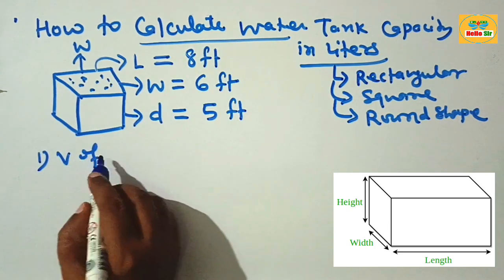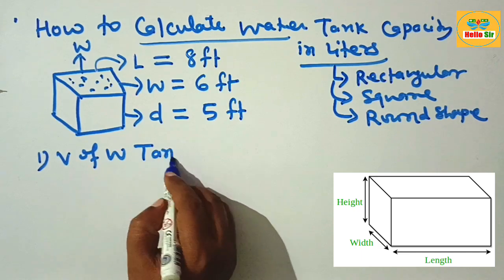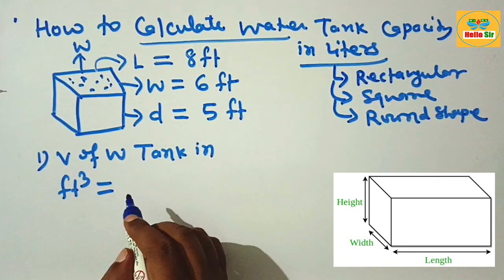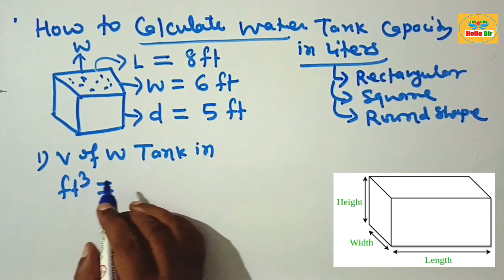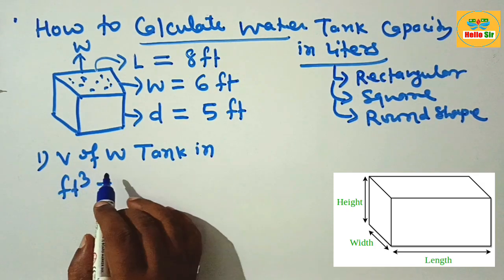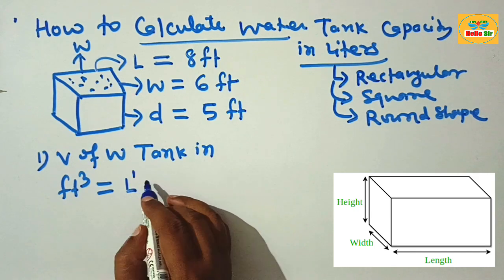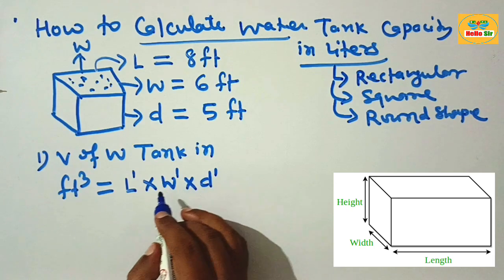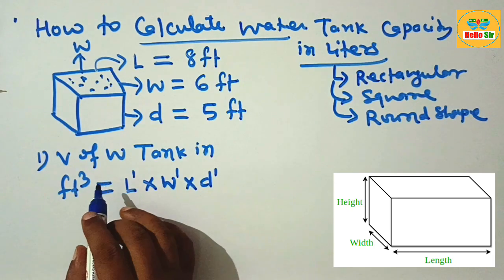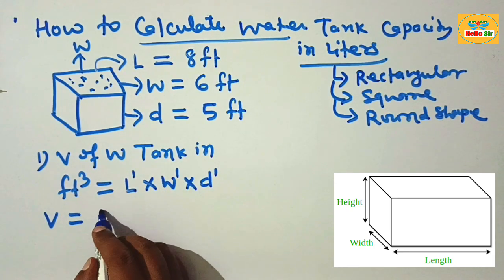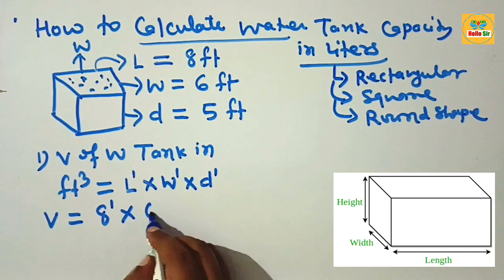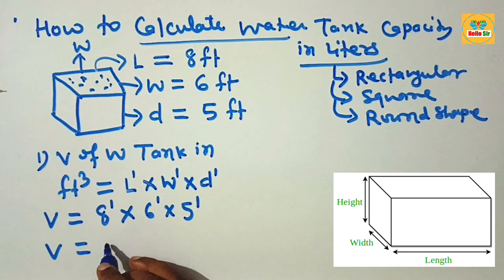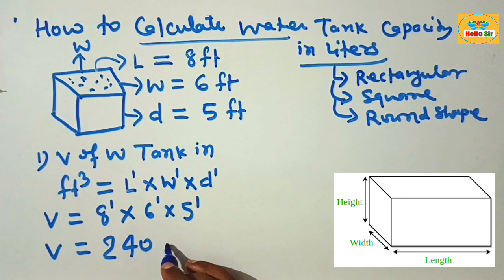First we calculate the volume of the water tank in cubic feet, and then we will convert the volume in cubic feet to liters. The formula is: length in foot times width in foot times depth in foot. Now putting in all the values: 8 foot times 6 foot times 5 foot. Multiplying all of these gives 240 cubic feet.